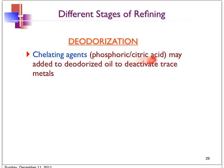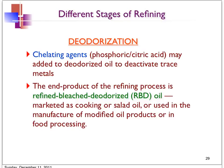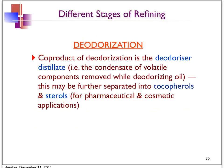Phosphoric or citric acid may be added as chelating agents into the deodorized oil to deactivate any trace metals that may still be present at this stage. The end product of the refining process after deodorization is called refined bleached deodorized oil, or RBD oil. This is usually marketed as cooking or salad oil, or can be used for manufacturing other types of oil products. The volatile components during deodorization are removed as condensate — this is called deodorizer distillate — and can be further separated into tocopherols and sterols for applications in pharmaceutical and cosmetic industries.